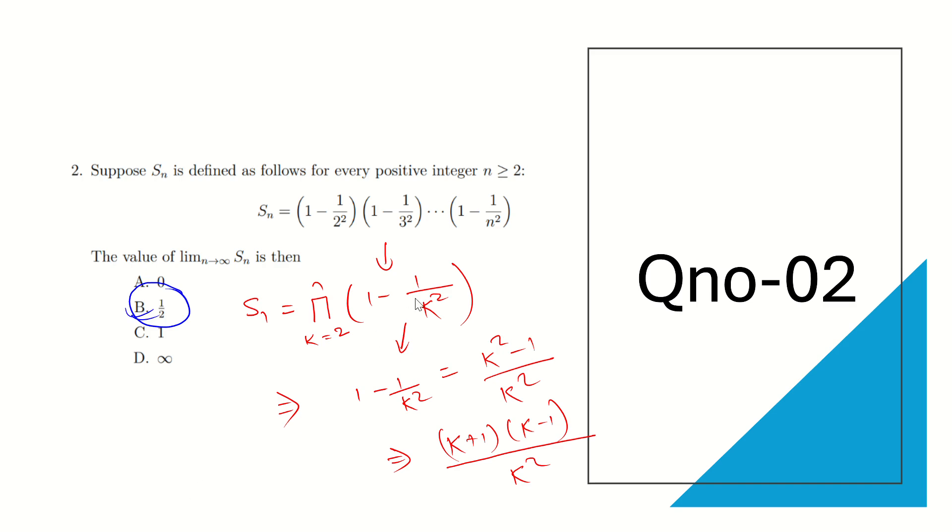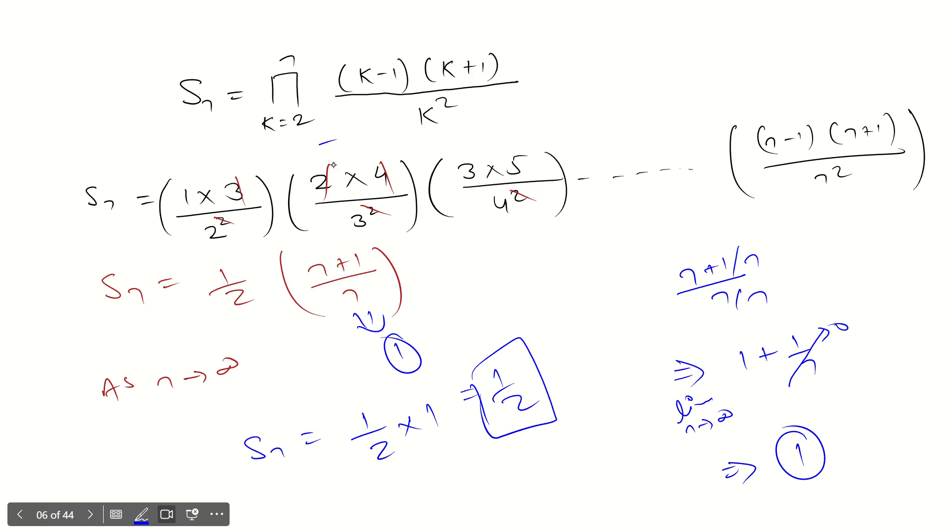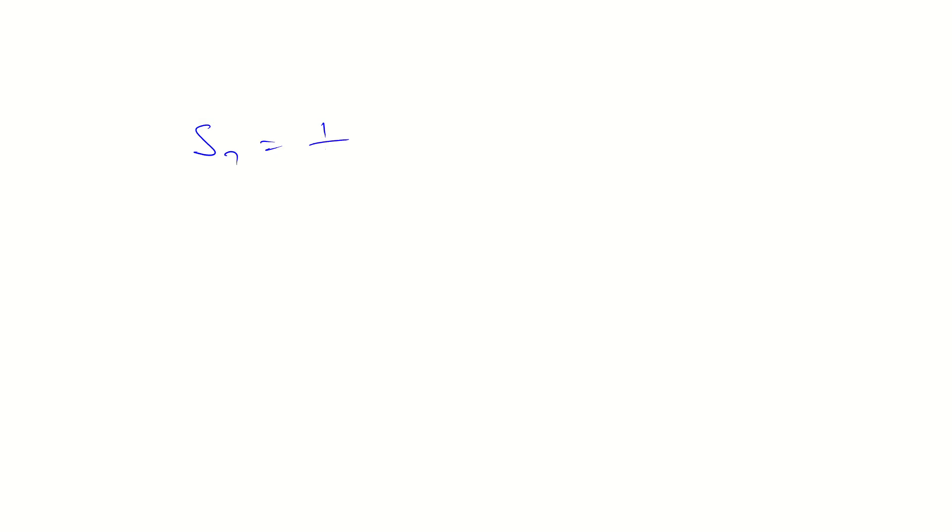So the answer is B, half. Guys, I didn't do anything complicated. I just simplified this, expanded it to (k+1)(k-1)/k², and just put values: k=2, k=3, k=4. As I put them, I saw these values are canceling. After canceling, what remains is S_n = 1/2 times (n+1)/n. And you know the basic rule: when we simplify this, it becomes 1 + 1/n. But n's value is infinity, so 1/infinity is zero. What remains? Half times 1, so that is half. So S_n's value will be half when n tends to infinity.